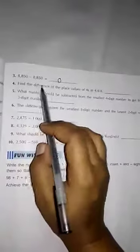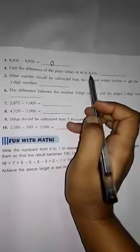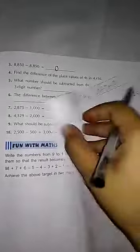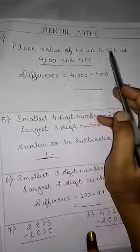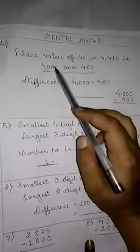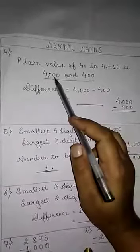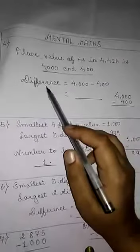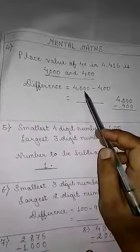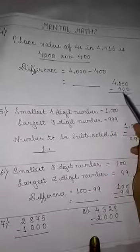Fourth question: find the difference of the place values of the 4s in 4416. The place value of the first 4 is 4000, and the place value of the second 4 is 400. You have to find the difference between 4000 and 400. Difference is equal to 4000 minus 400. We will write in column and do the subtraction.